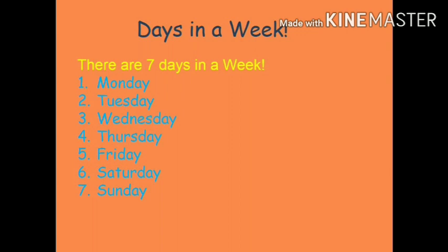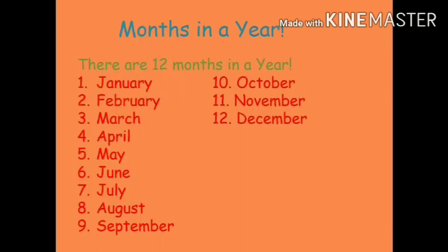How many months are there in a year? There are 12 months in a year. Let us count: January, February, March, April, May, June, July, August, September, October, November, and December. Which month is going on right now children? It is the seventh month, that is July.